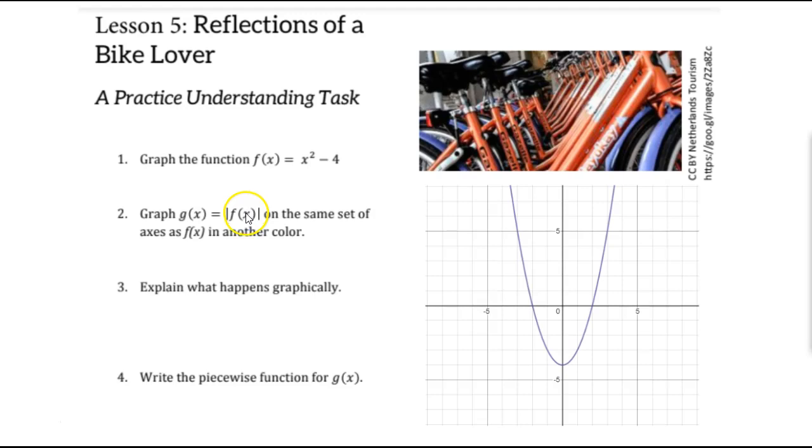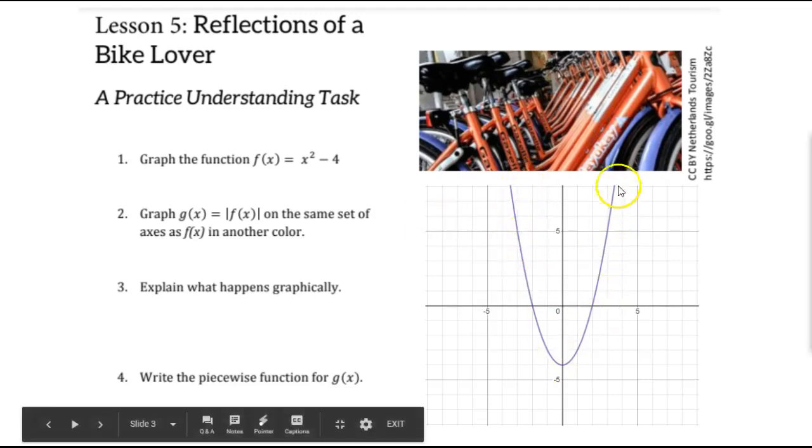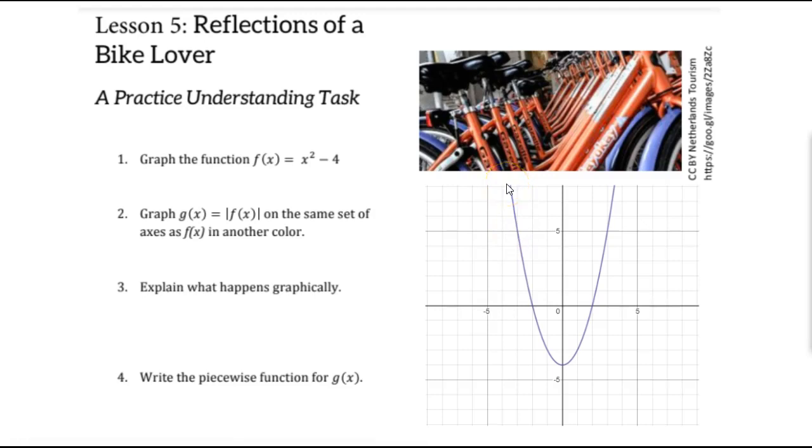When we graph this, we need to think what does absolute value actually do to something? And we know physically, it takes any negative numbers and it turns them into positive numbers. So when we think about this particular function, we need to think about what were the numbers that came out of it that were negative, because now those negative numbers are going to become positive numbers.